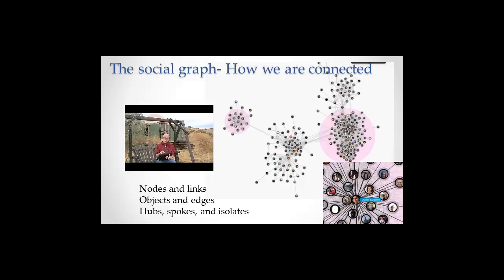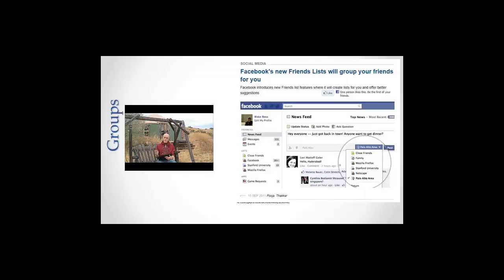They're also very important people because if you cut out that one person, these two groups become unattached. So that's the notion of groups, and Facebook has only recently come to that notion of groups, where your friends are clustered.